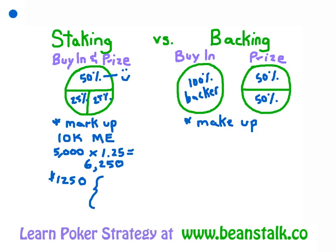What justifies this markup? There are a few very good justifications. One is your labor — you're going to be the person sitting at the table for several hours, in the case of the main event up to eight days. You also have expenses: hotel, food. And finally, you're a good player, so your stakers have to pay a skill premium. This is why you might see different players asking different levels of markup — it's not because their expenses are higher, it's that their time at the table is more valuable. They're just better. Markups can range anywhere from 1.1 to 1.5 and above.